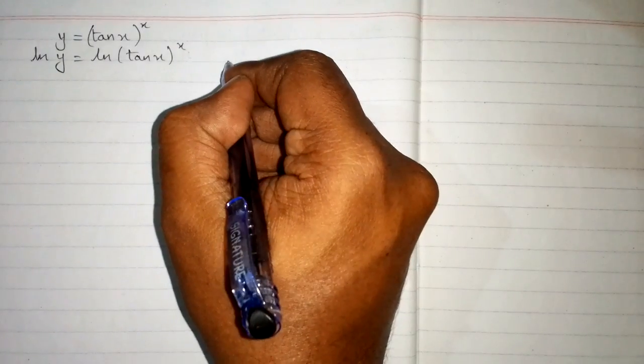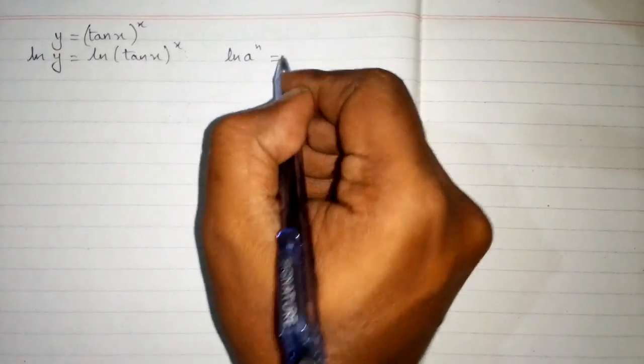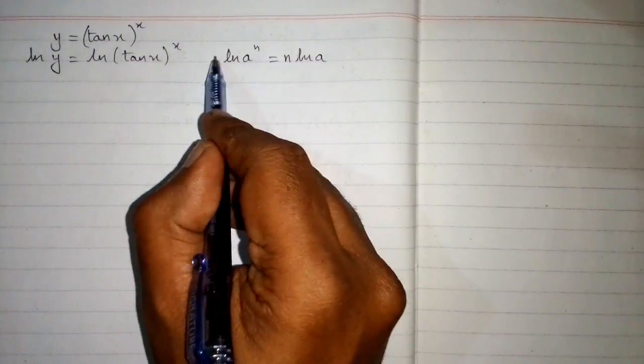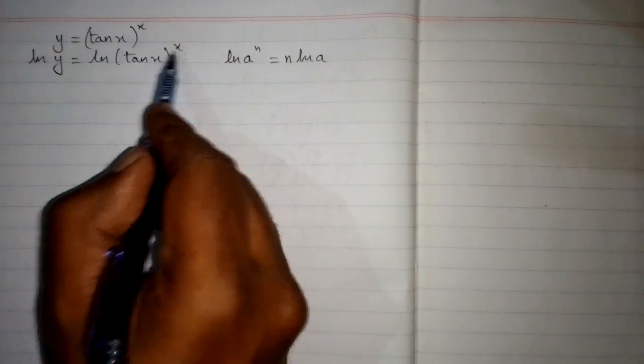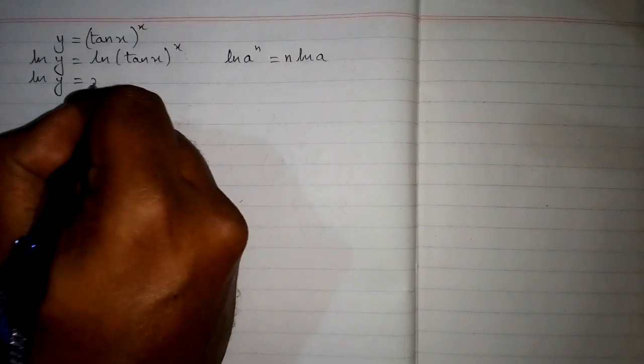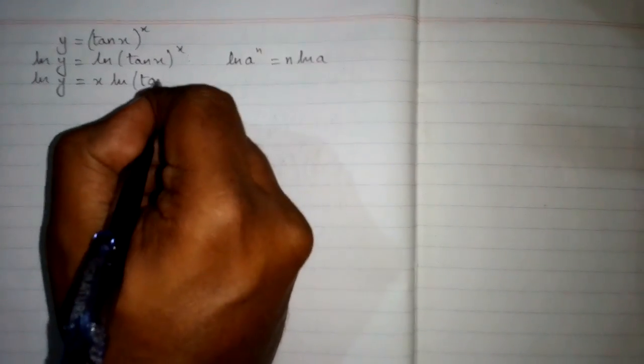First of all we will apply natural log on both sides, so we have ln of y is equal to ln of 10x to the power x. Now we know that ln of a to the power n is equal to n times ln of a, so the power will become the coefficient of the log. Applying this rule, the power x becomes the coefficient of ln of 10x, giving us ln of y is equal to x times ln of 10x.